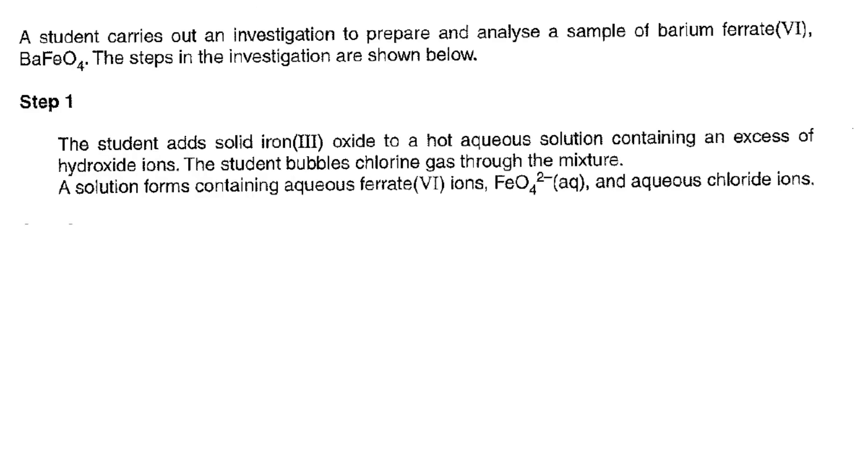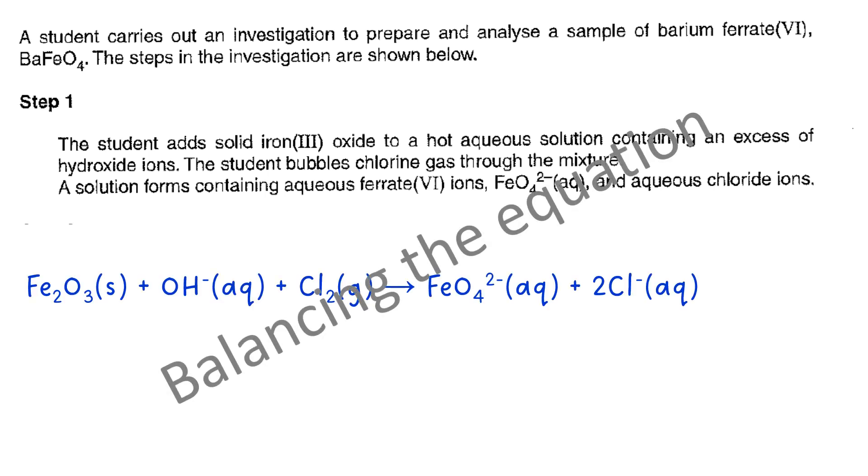So in step one what you need to do really is have a read of what's going on and take the actual compounds that are named and try and put together an equation that you'll then need to balance. So first of all the iron oxide is Fe2O3, the excess of hydroxide is obviously OH-, and then the student bubbles chlorine gas for the mixture which is your Cl2. They give you FeO4^2- as a product and then it says aqueous chloride ion, so all I'm doing is assembling the things that are named in that description.